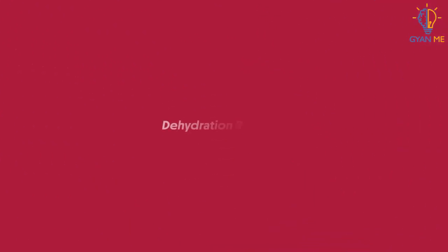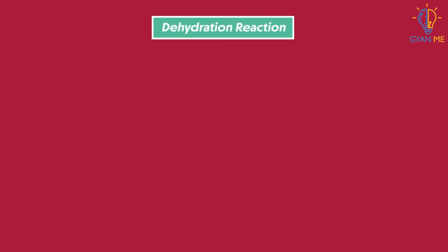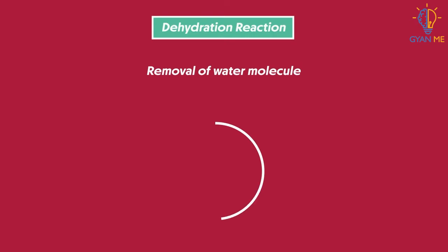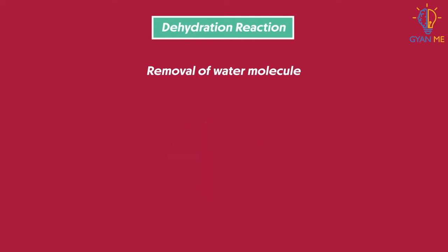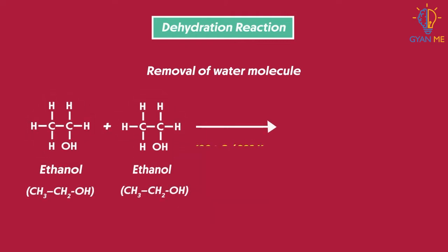First, let us see the dehydration reaction. As the name suggests, dehydration means the removal of a water molecule. When ethanol is heated with a strong acid like concentrated sulfuric acid, it loses one molecule of water.